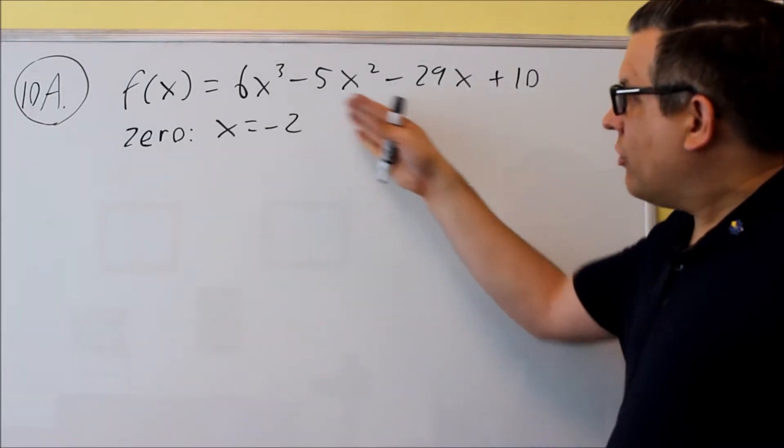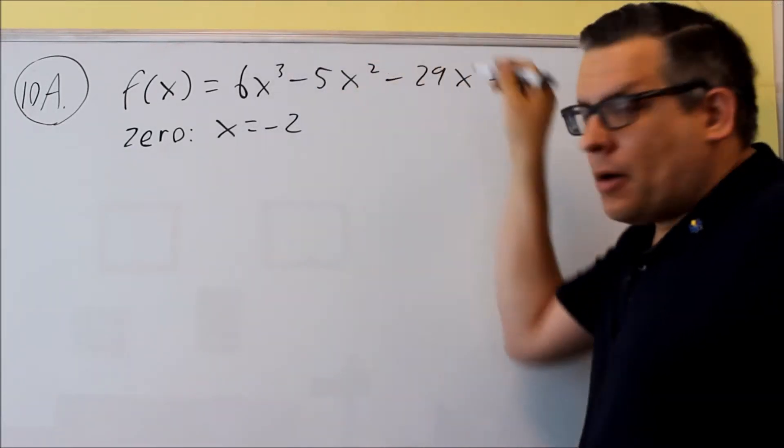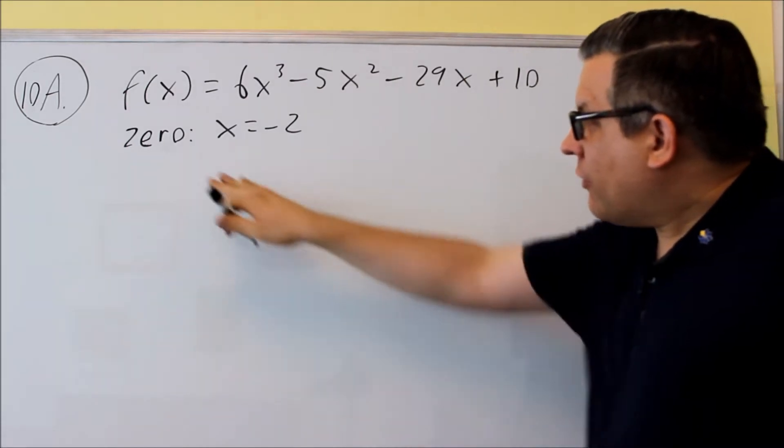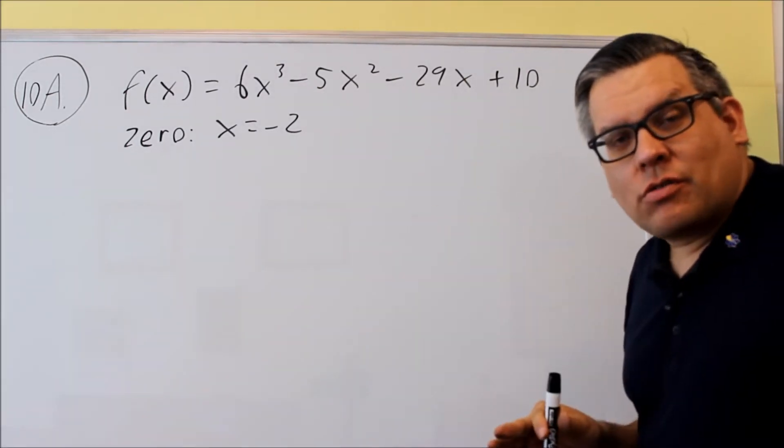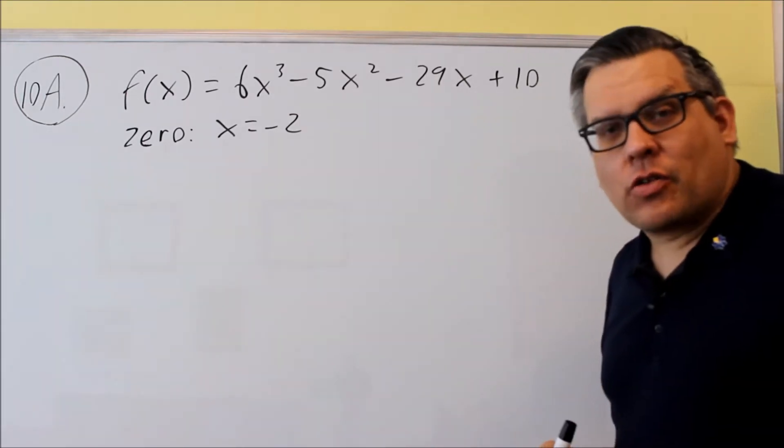For problem 10, they're going to give you a polynomial and they're going to give you the zero. So what they want you to do is use synthetic division and factoring to find the other zeros.